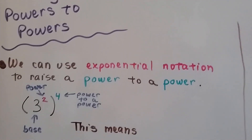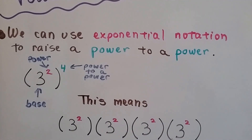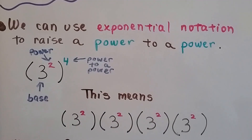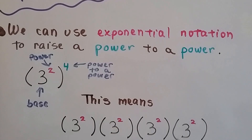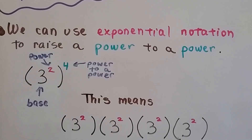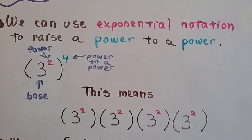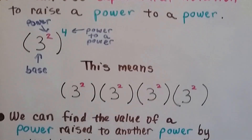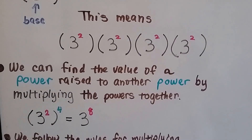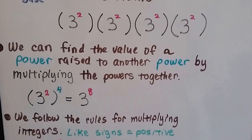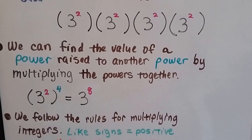I've got three theorems for you. We can use exponential notation to raise a power to a power. We can see 3 is our base, we've got a little power exponent of 2, and it's being raised to a power of a power, to 4. All this means is we've got 3 squared 4 times. We can find the value of a power raised to another power by multiplying the powers together. If we've got 3 squared and it's raised to the 4th power, it means 3 to the 8th power.